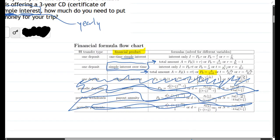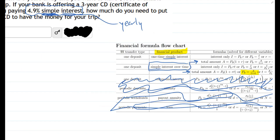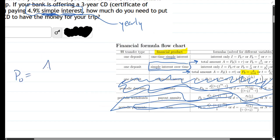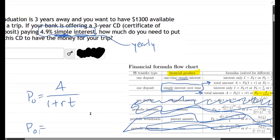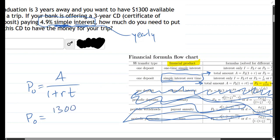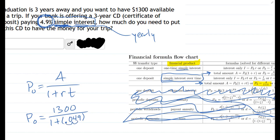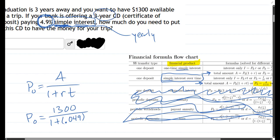So let's go ahead and write that formula down: P0 equals A over 1 plus rt. We don't know the initial principal amount. We know the final total amount is 1300, and in the denominator our rate is 4.9 percent, but of course you need to turn it into a decimal, 0.049. And now t is how many time periods, and for us we have three years in this problem.